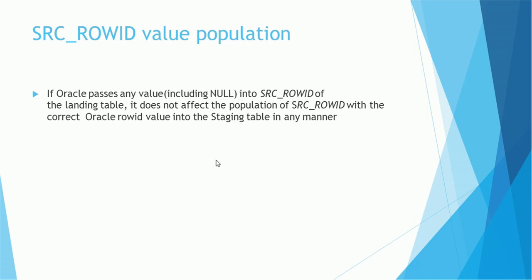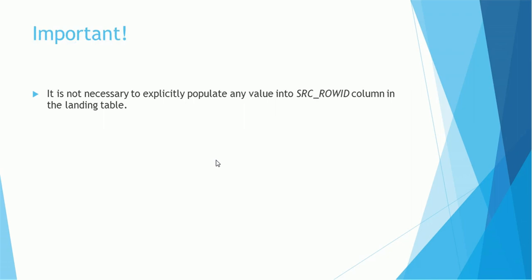How is the source row ID value populated? In Oracle, if the ETL passes a null value in the source row ID, it does not affect the population of the source row ID with the correct Oracle row ID value in the staging table. The system uses the row ID function from Oracle to populate this value if the source sends null. It is not necessary to explicitly populate any value in the source row ID column in the landing table — it is not mandatory. If you provide a value, make sure it is unique. If you do not provide a value, the system will take care of populating it.